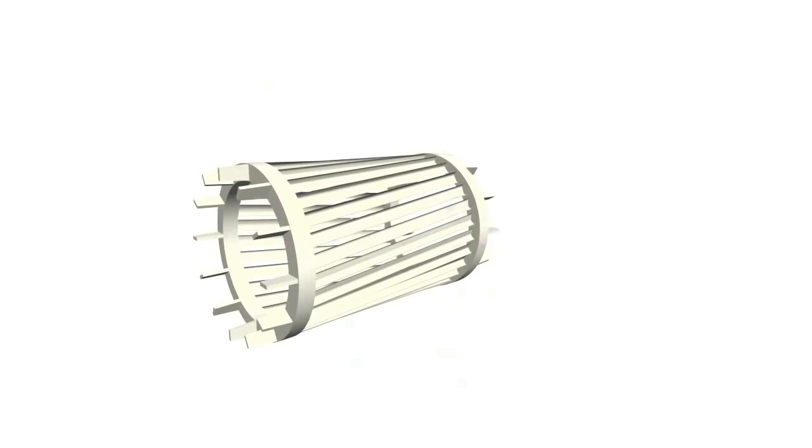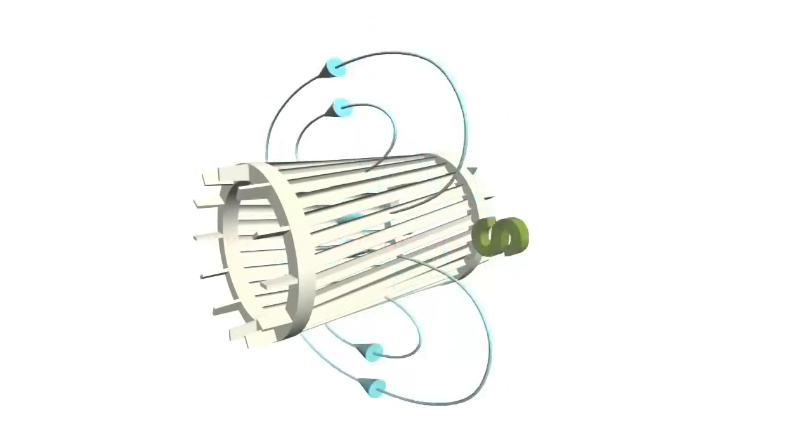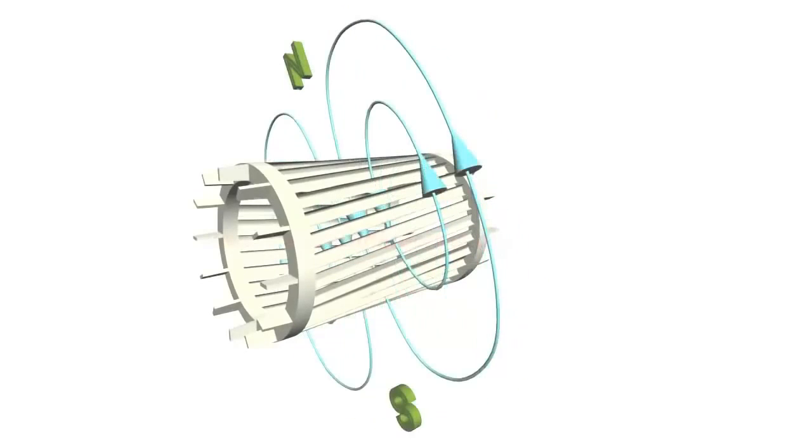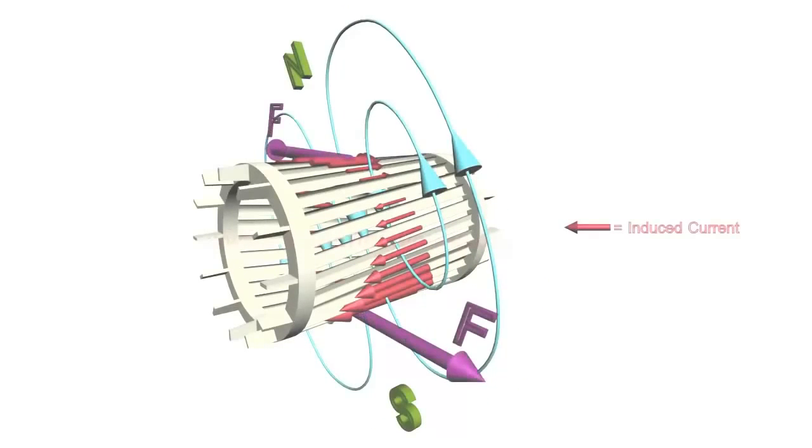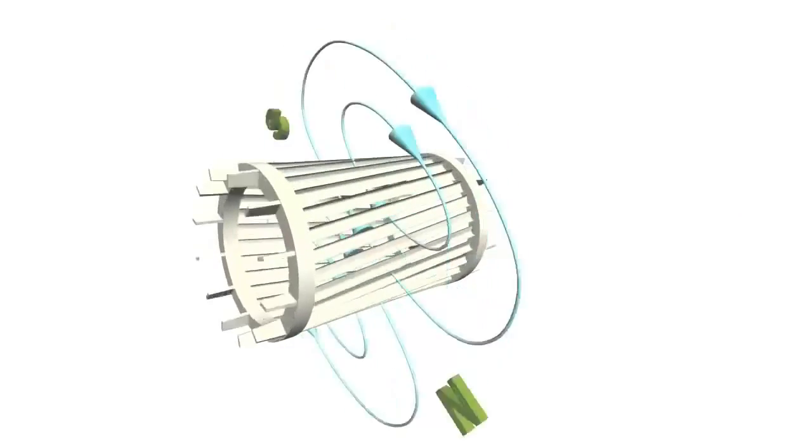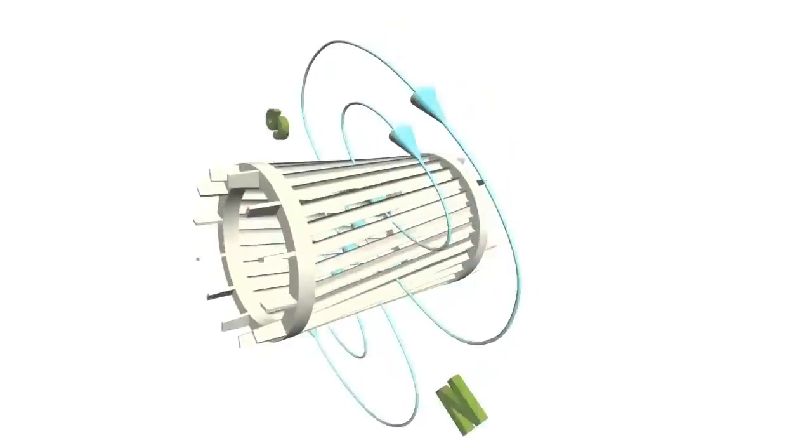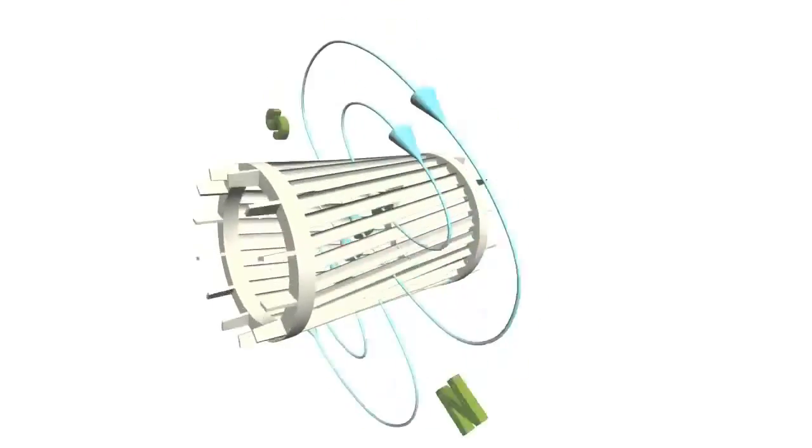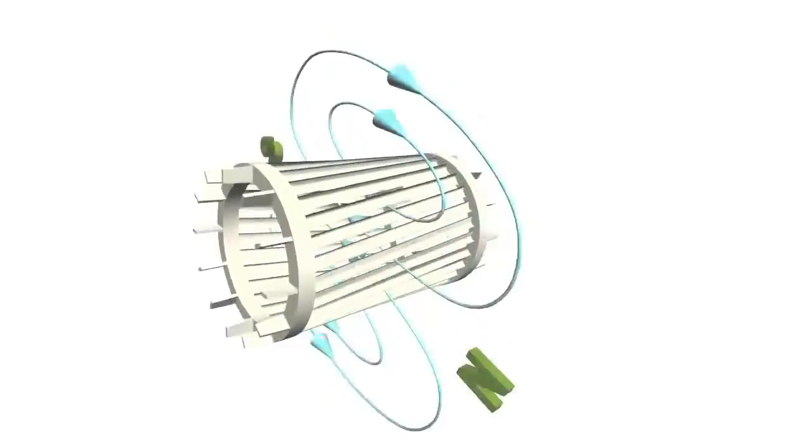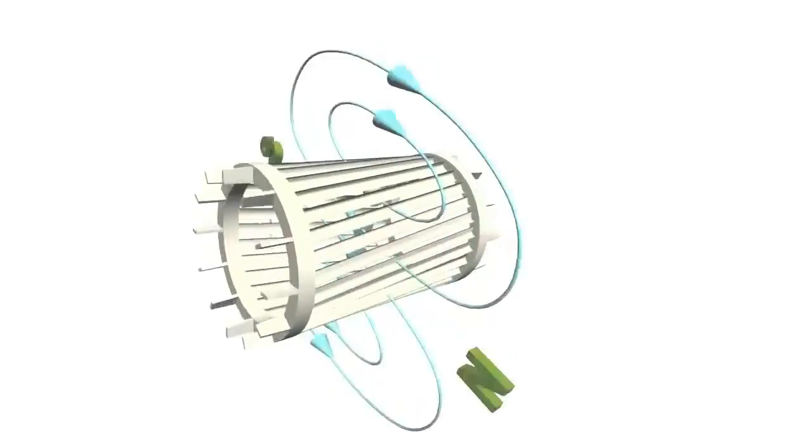Three-phase AC current passing through stator winding produces a rotating magnetic field. So as in the previous case, current will be induced in bars of squirrel cage, which is shortened by end rings, and will start rotating. That's why it's called an induction motor.